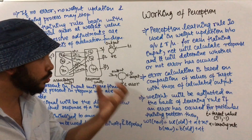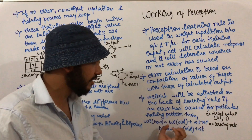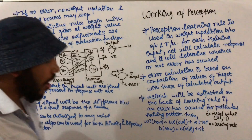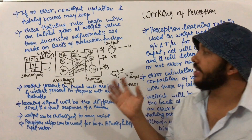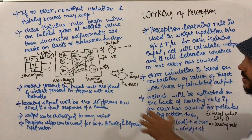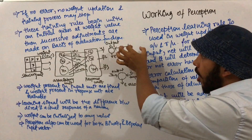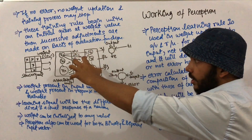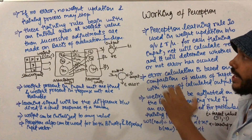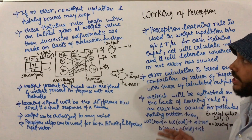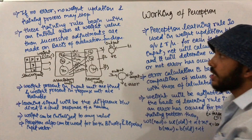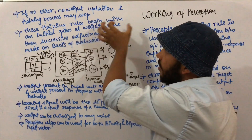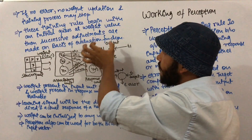We also add bias to the weight calculation. The bias is updated as b_new equals b_old plus alpha times t. Now suppose after 4 to 5 steps we find that no error has occurred — the network output is equal to the target output. If there is no error, there is no weight updation required. Finally, the training process stops. This training process occurs in a finite number of steps. Training rules begin with an initial guess at the weight value, and successive adjustments are made based on an evaluation function.